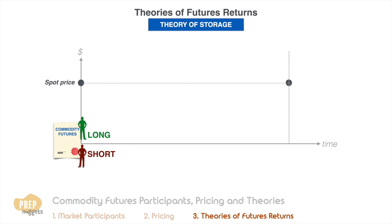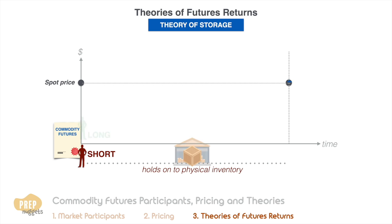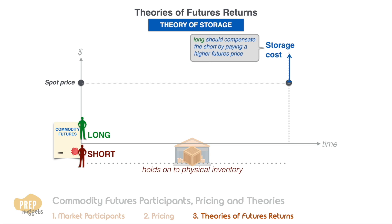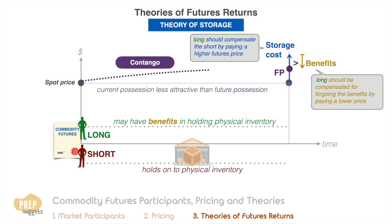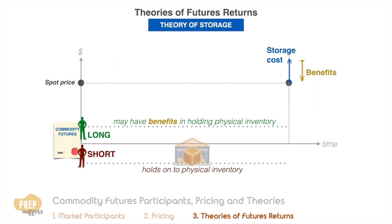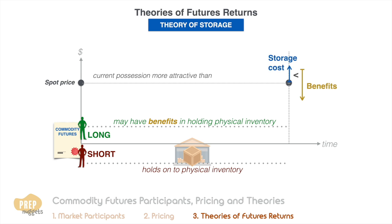The theory of storage is based on the fact that the short holds on to the physical inventory of the commodity over the length of the futures contract. Because the short bears the cost of storage, the long should compensate the short by paying a higher futures price. However, there could be benefits to the long in holding the commodity, so the long should be compensated for forgoing those benefits by paying a lower price. When the costs of storage outweigh the benefits of holding physical inventory, current possession is less attractive than future possession, futures will trade at a higher price than spot, and the market will be in contango.